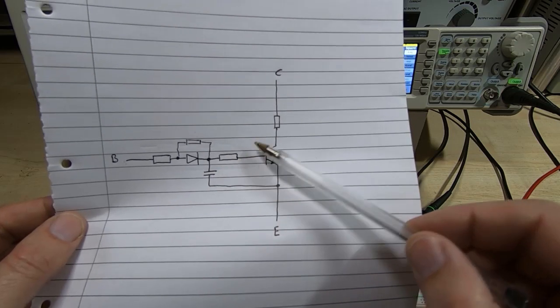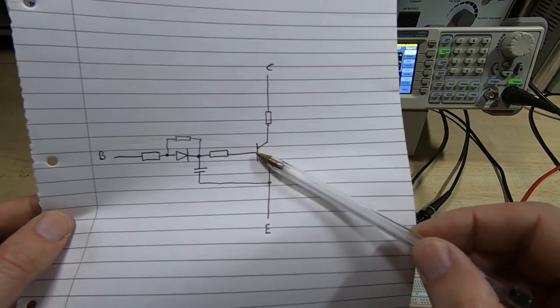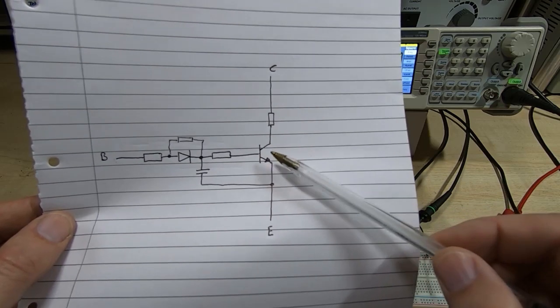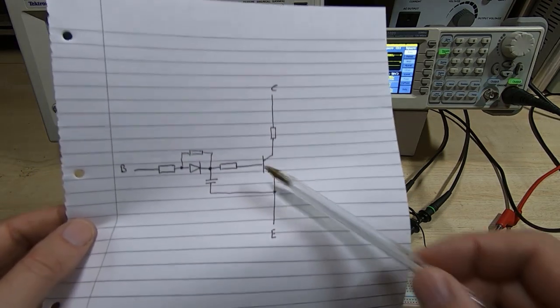And that's why you see the delay on the scope - because the transistor is being driven into saturation.